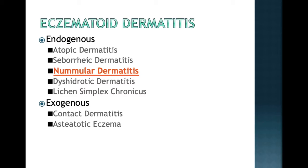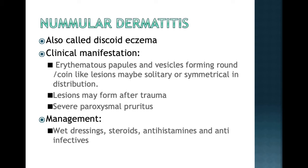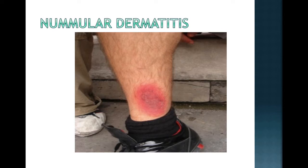Let us now proceed to another eczematoid dermatitis: nummular dermatitis, also called discoid eczema. The lesions are described as erythematous papules and vesicles forming round or coin-like lesions; they may be solitary or symmetrical in distribution. The lesion is also very pruritic. Treatment includes wet dressings if the lesions are weeping or oozing, topical corticosteroids, oral antihistamines, and anti-infectives if secondarily infected.